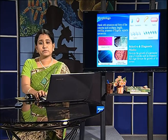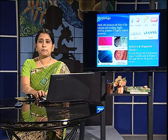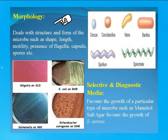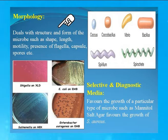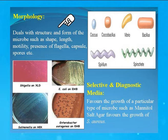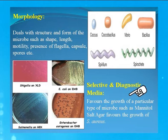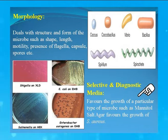One can identify a microbe by observing its morphology, which deals with the structure, form, shape, length, etc. of a microbe — that is, whether the microbe has flagella, forms a capsule, or forms a spore. One can also identify a microbe by cultivating it on a selective or diagnostic media. A selective media favours the growth of a particular type of microbe — for example, Mannitol salt agar favours the growth of the bacteria known as Staphylococcus aureus.